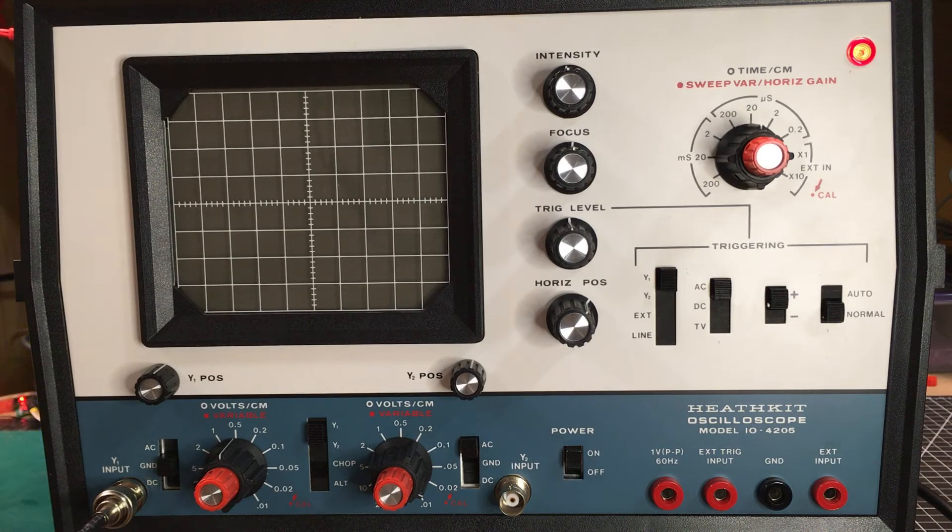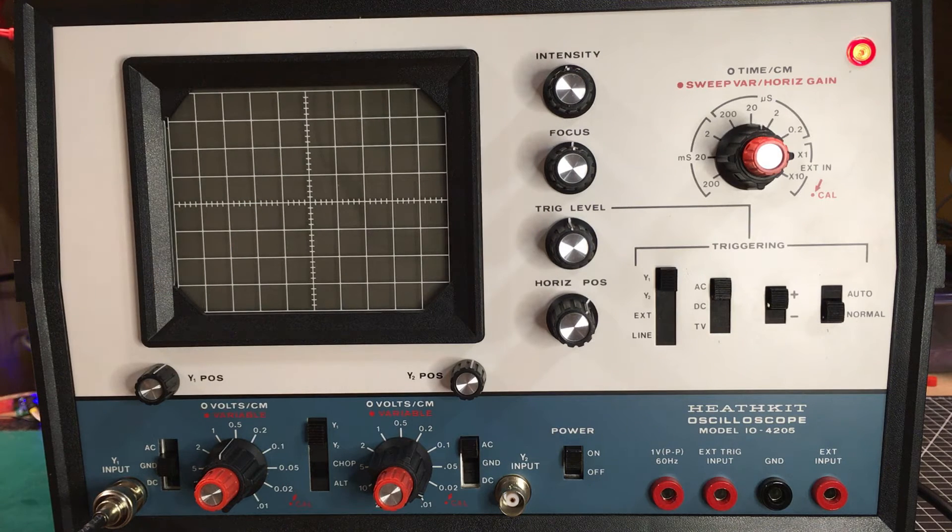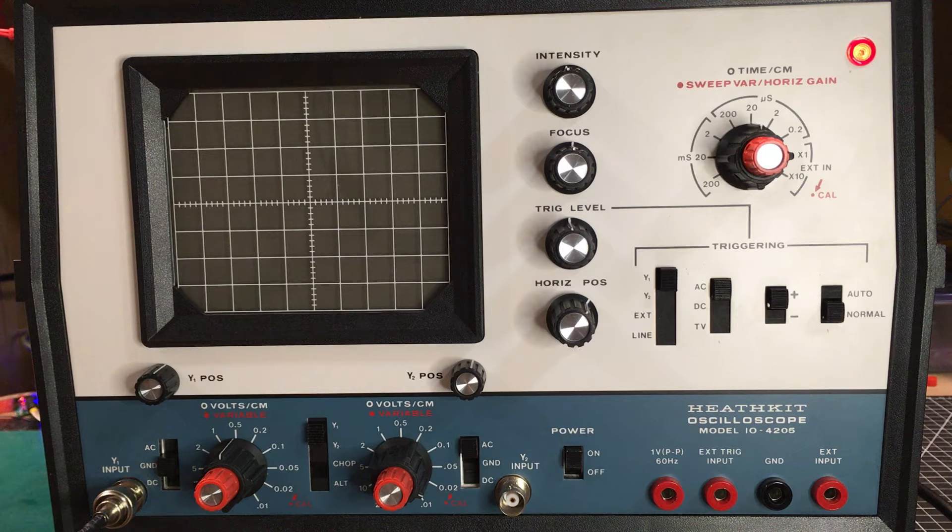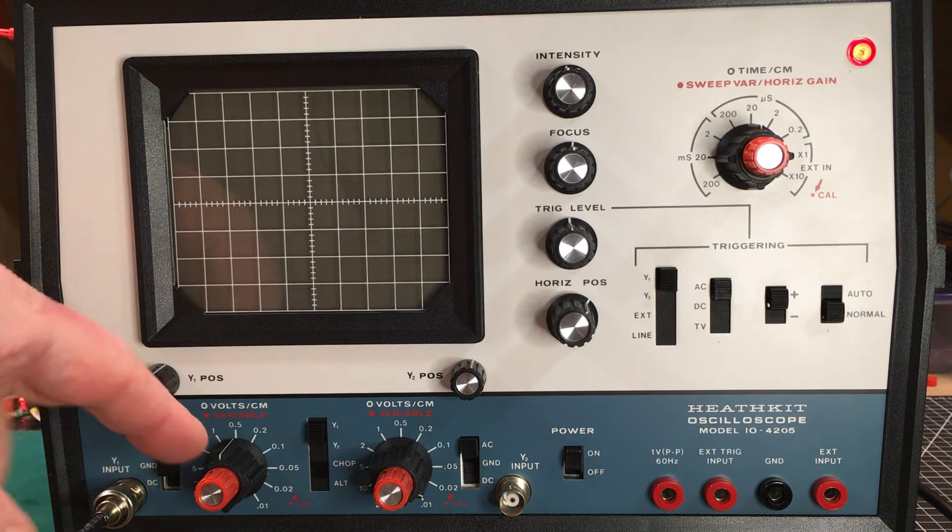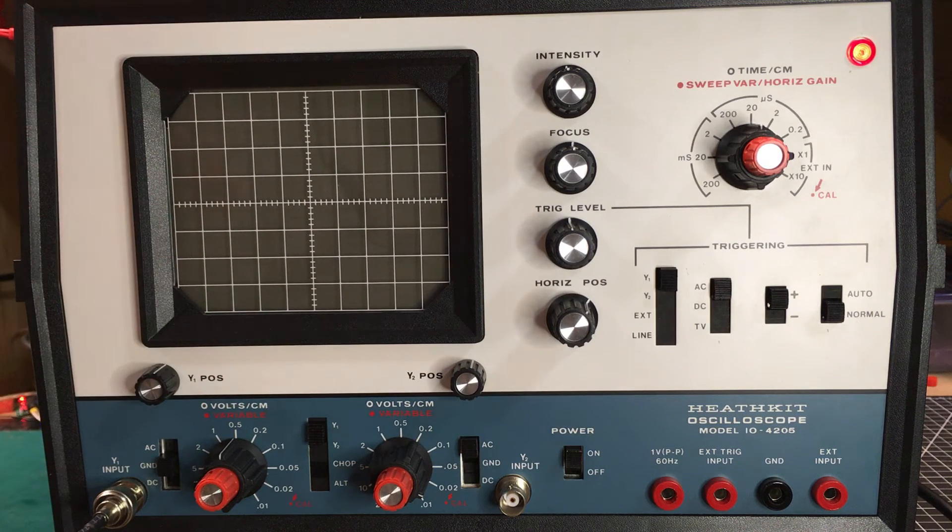This is the oscilloscope that we're going to use right here. It's an old Heathkit oscilloscope, Model 10-4205. It's a very basic oscilloscope, a dual trace oscilloscope. We'll be looking at one channel today. Let's go through the basic functions that we discussed.